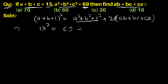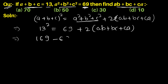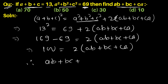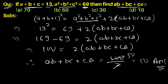So 169 minus 69 equals 2(ab plus bc plus ca), which gives 100 equals 2(ab plus bc plus ca). Therefore ab plus bc plus ca equals 100 divided by 2, which is 50.